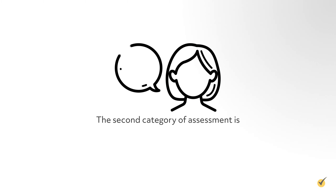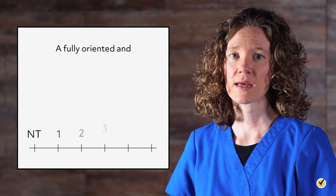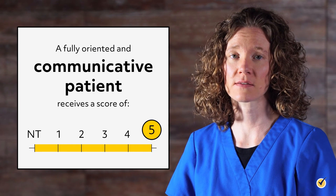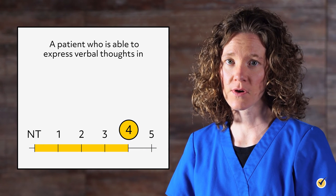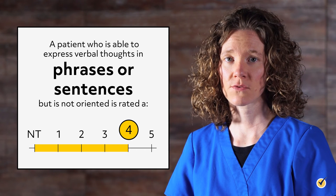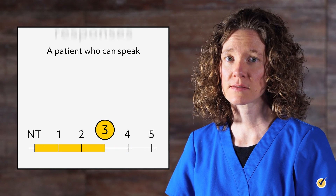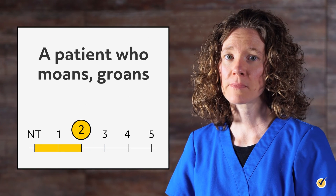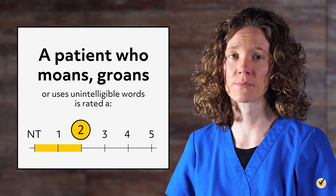The second category of assessment is verbal response. A fully oriented and communicative patient receives a score of 5 in this category. A patient who is able to express verbal thoughts in phrases or sentences but is not oriented is rated a 4. A patient who can speak single-word responses is rated a 3. And a patient who moans, groans, or uses unintelligible words is rated a 2.